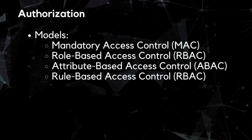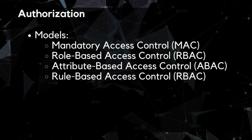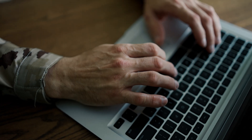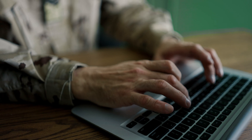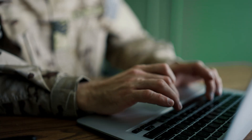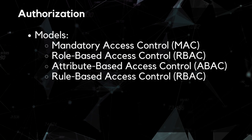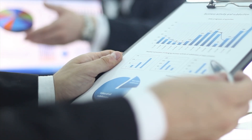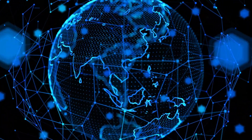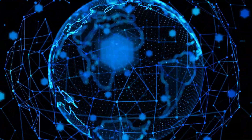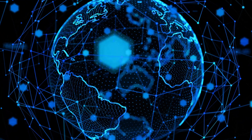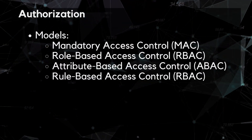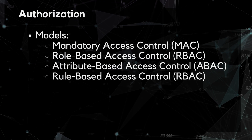There are several types of authorization models used in information security. First is mandatory access control, used in high-security environments such as government agencies or military organizations. It uses a hierarchical classification system where users can only access resources at the same or lower classification level than their own. Next is role-based access control, where access is granted based on the user's job role or function. Then, attribute-based access control uses a set of attributes — such as user location, time of day, or security clearance level — to determine access privileges, providing a more granular policy. Finally, rule-based access control grants access based on a set of predefined rules or policies.